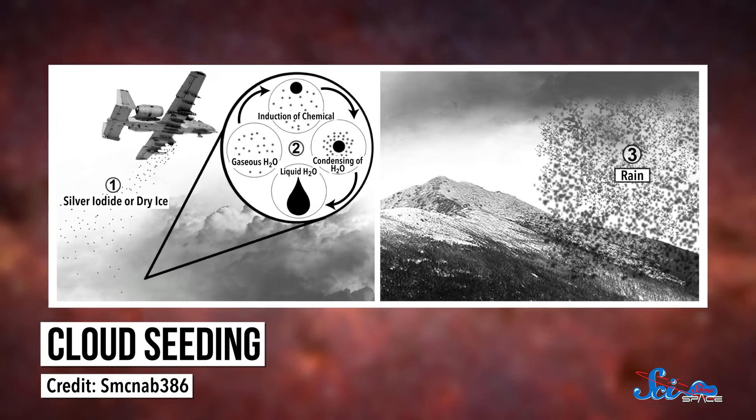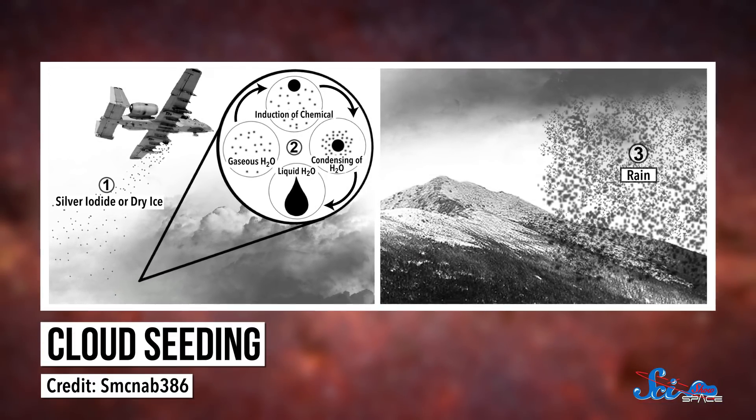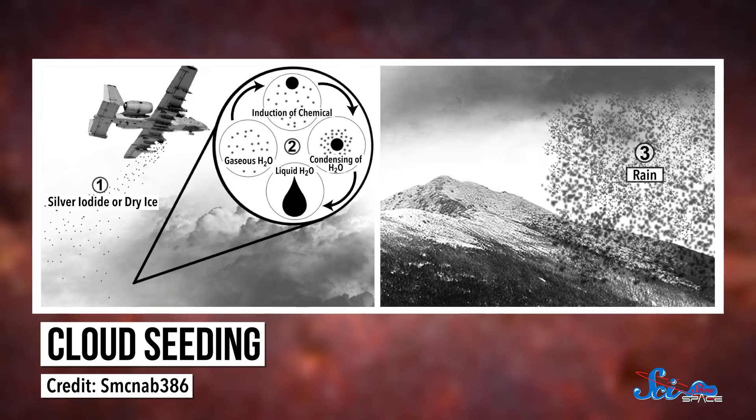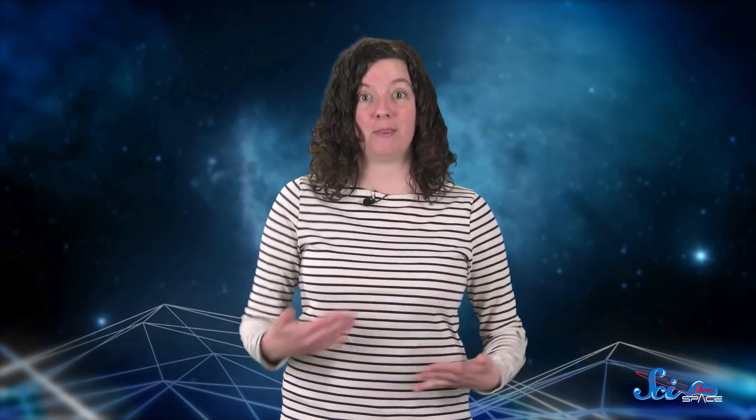With cloud seeding, you add nucleation sites into the atmosphere, usually by spraying tiny, harmless particles of silver iodide or dry ice from a generator or plane. More nucleation sites mean more raindrops form, so you ultimately get more precipitation.